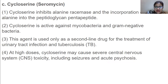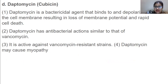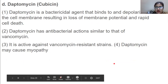Daptomycin is a bactericidal agent that inhibits and depolarizes the cell membrane, resulting in loss of cell membrane potential and rapid cell death. Daptomycin has antibacterial action similar to vancomycin and is active against vancomycin-resistant strains. Daptomycin may cause myopathy.